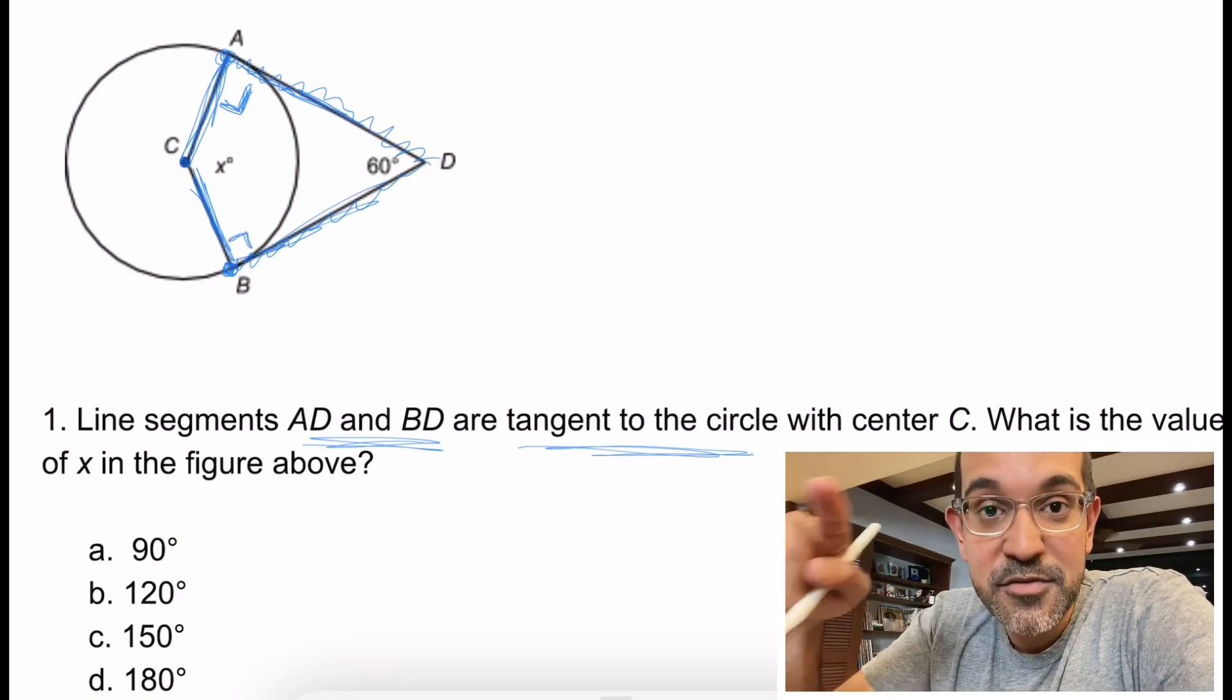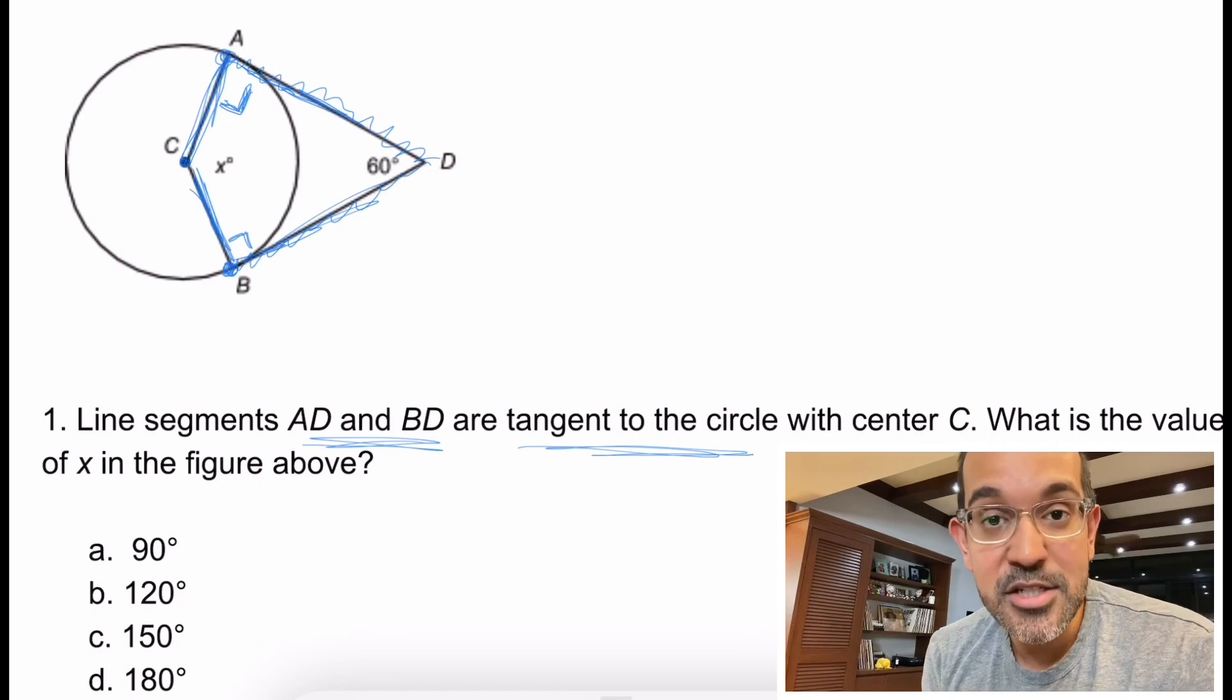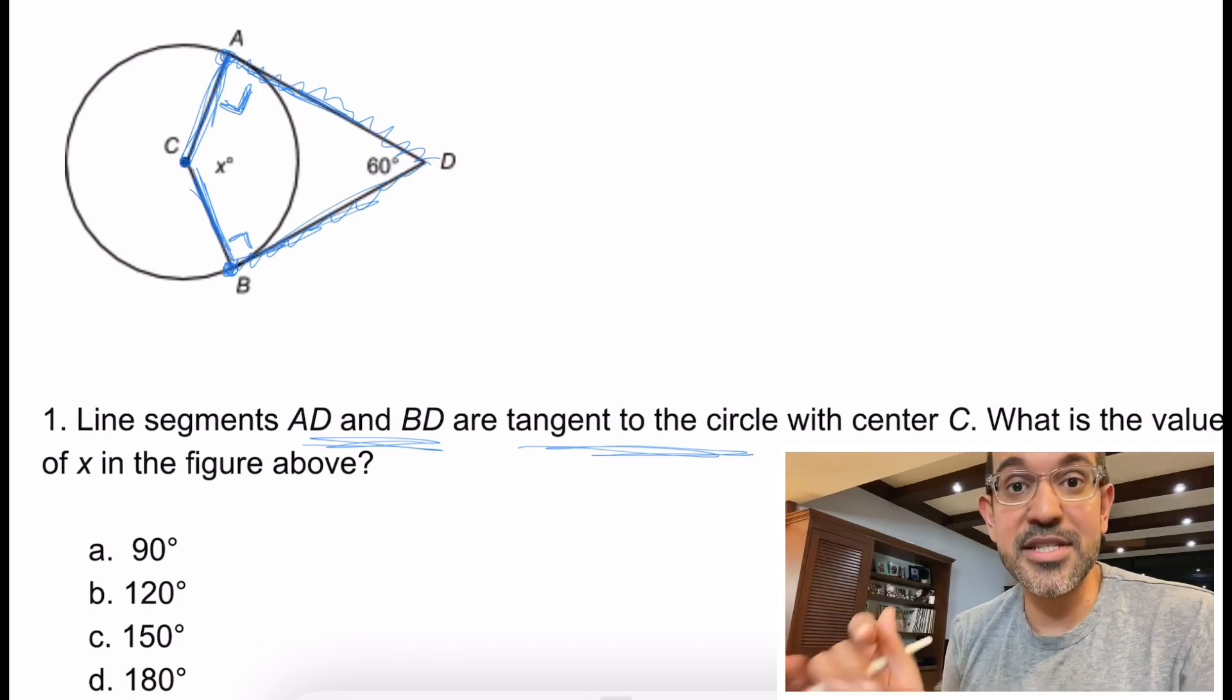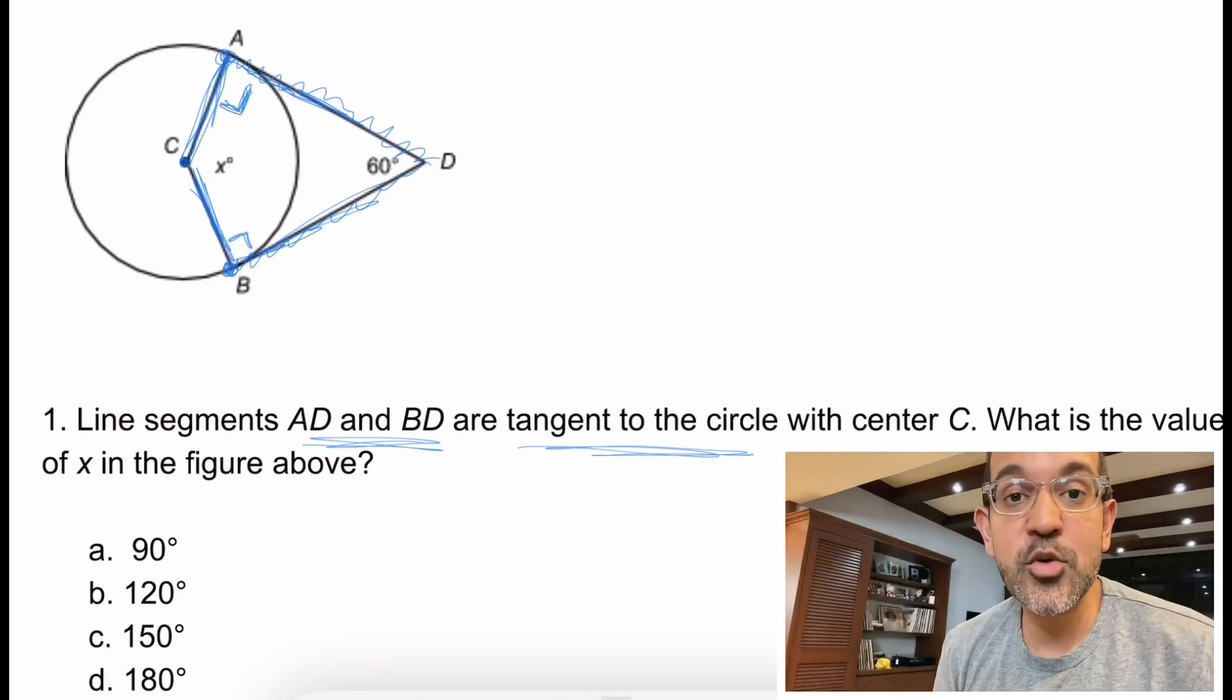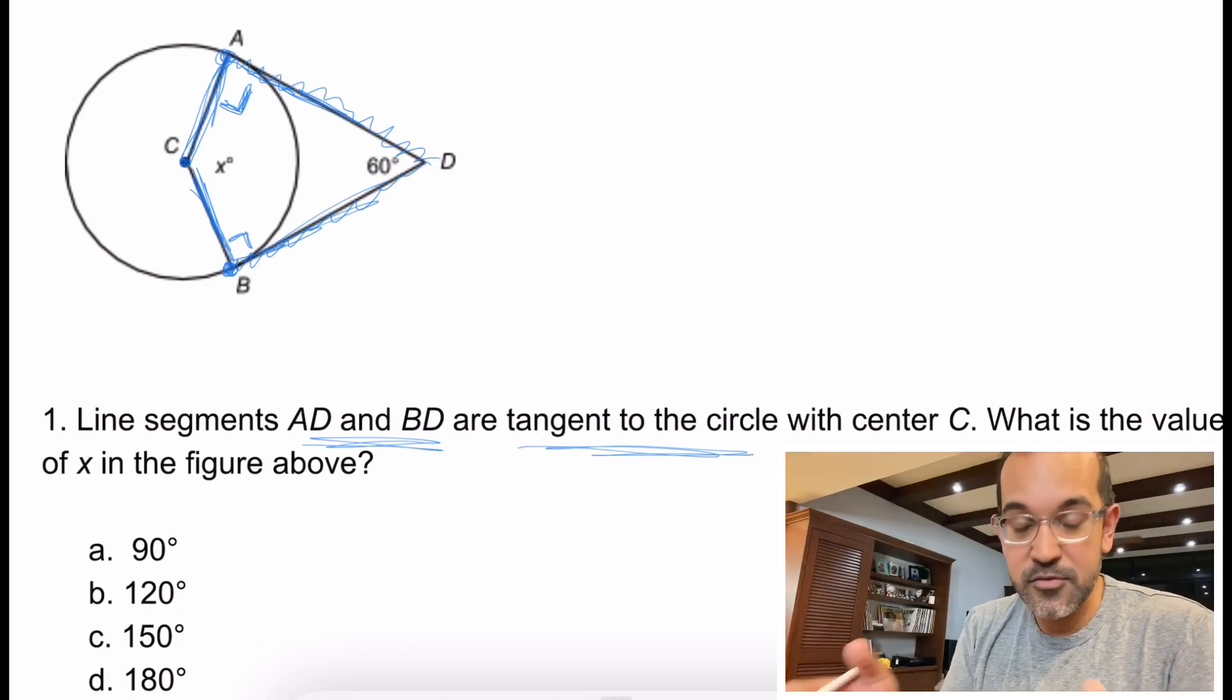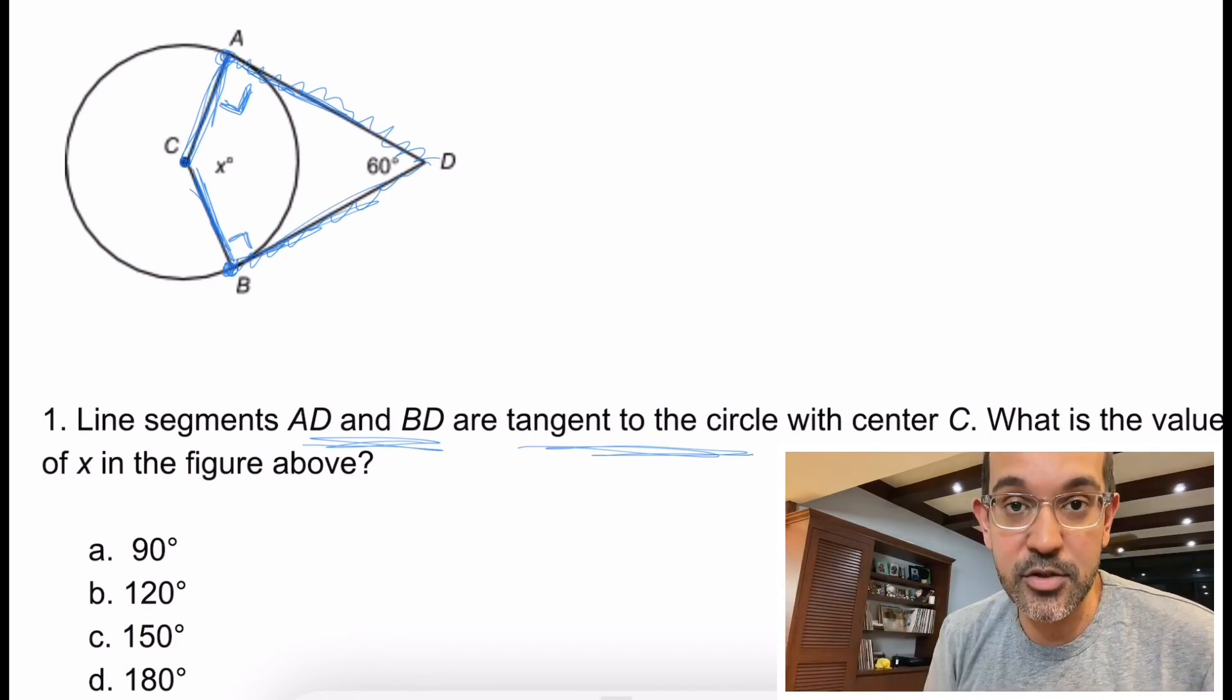So now we know each of those are 90 degrees. So again, remember, a tangent line to a circle. What are the two rules? Number one, if it's tangent to the circle, it's touching at only one point. Number two, it creates a 90 degree angle with the radius. That's it. If you draw a radius from that one point where it's touching, what do you create? A 90 degree angle.